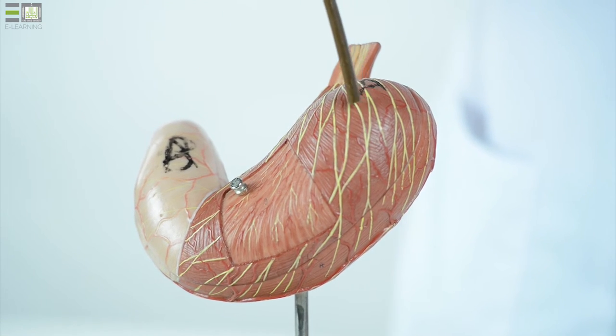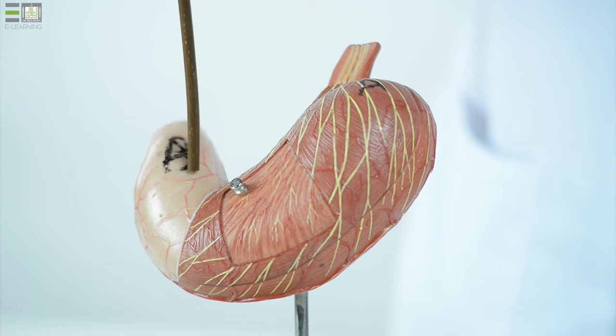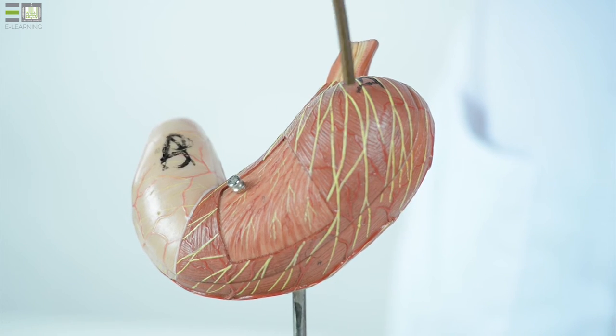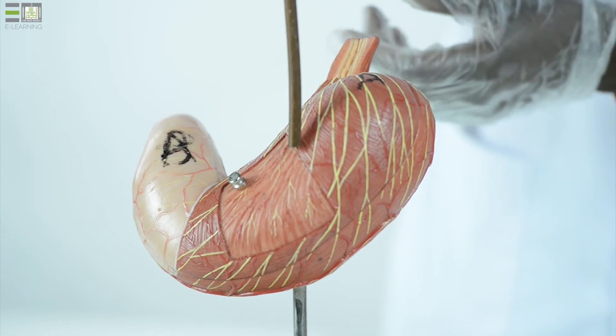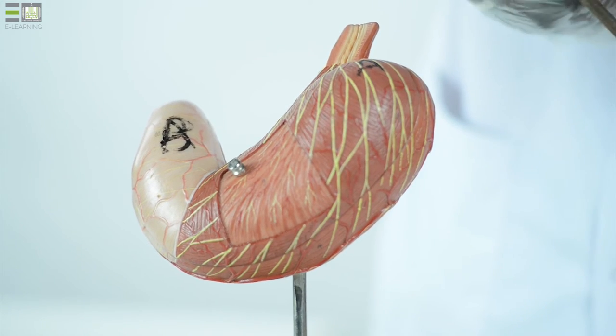The wall of the stomach is formed by three layers. The outer is peritoneal, visceral peritoneum, the middle is muscle, and the inner one is epithelium.